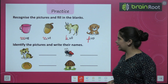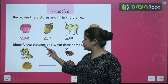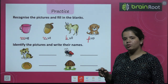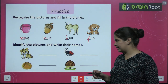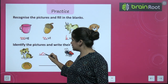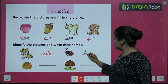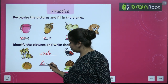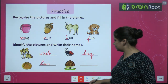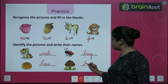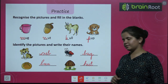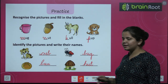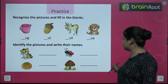Now we will again identify the pictures and write their names. We have to look at the pictures and write their names. First is C-U-B, cub. B-U-G, bug. B-U-N, bun. H-U-T, hut. Is it clear to everyone? These are the U-sound words.